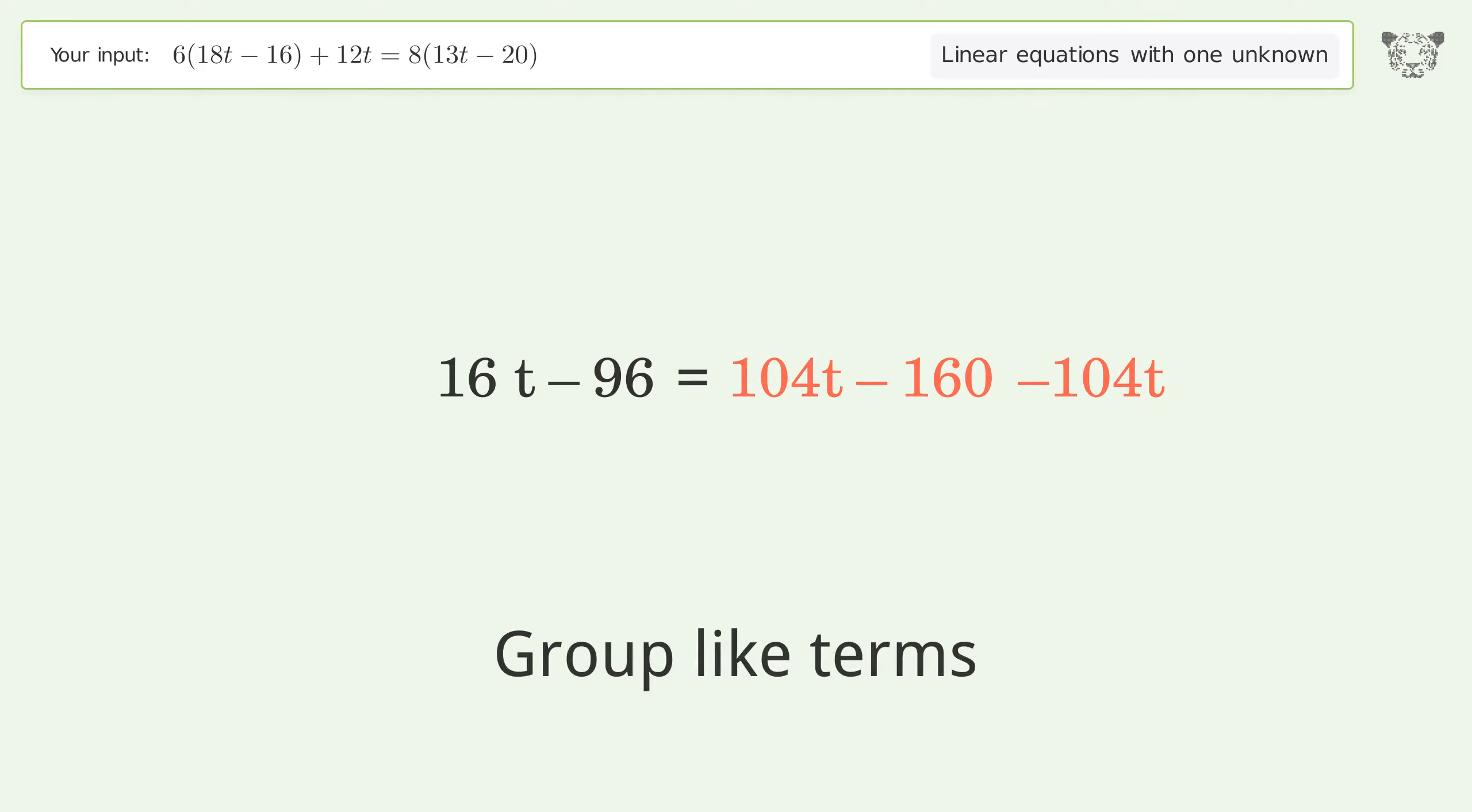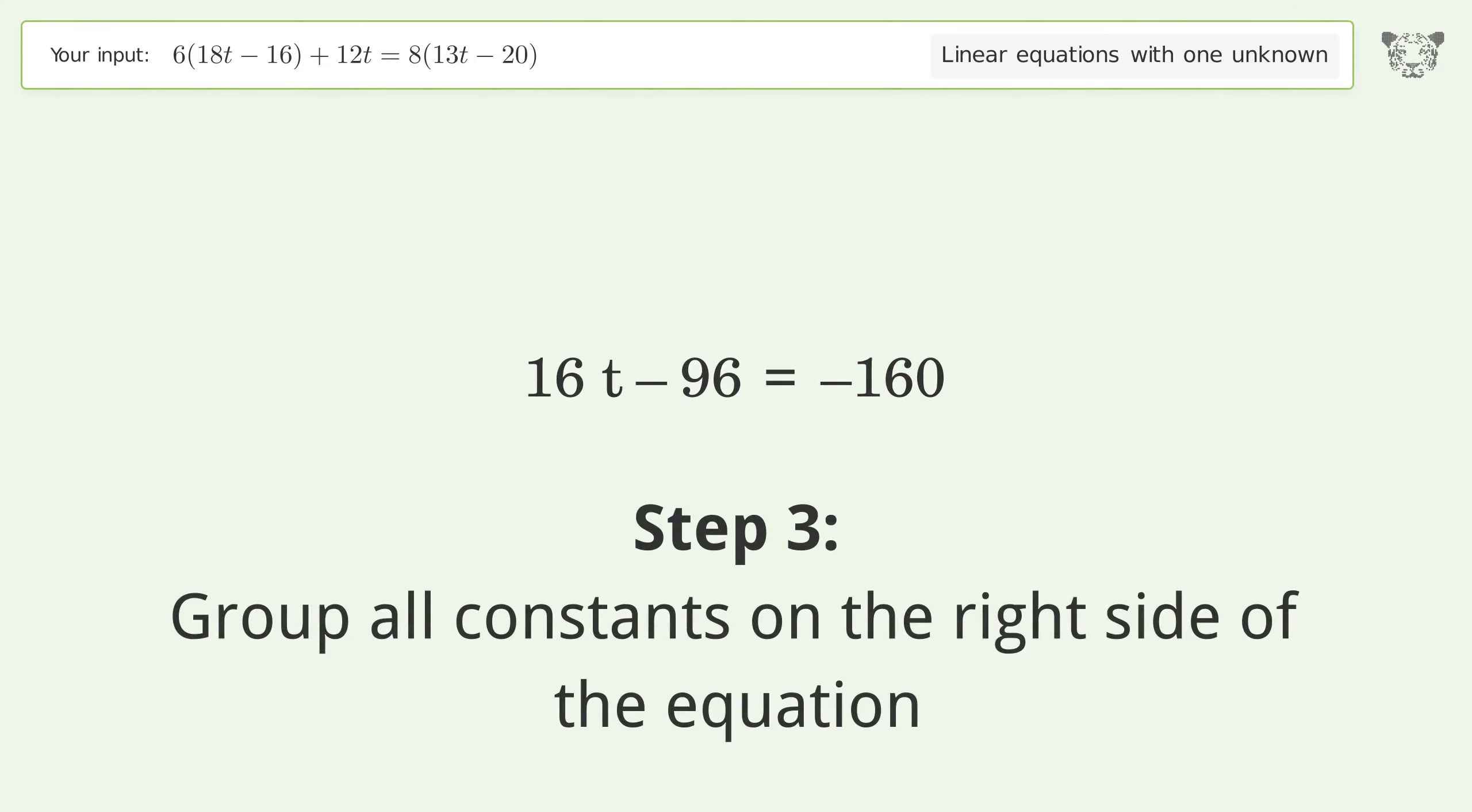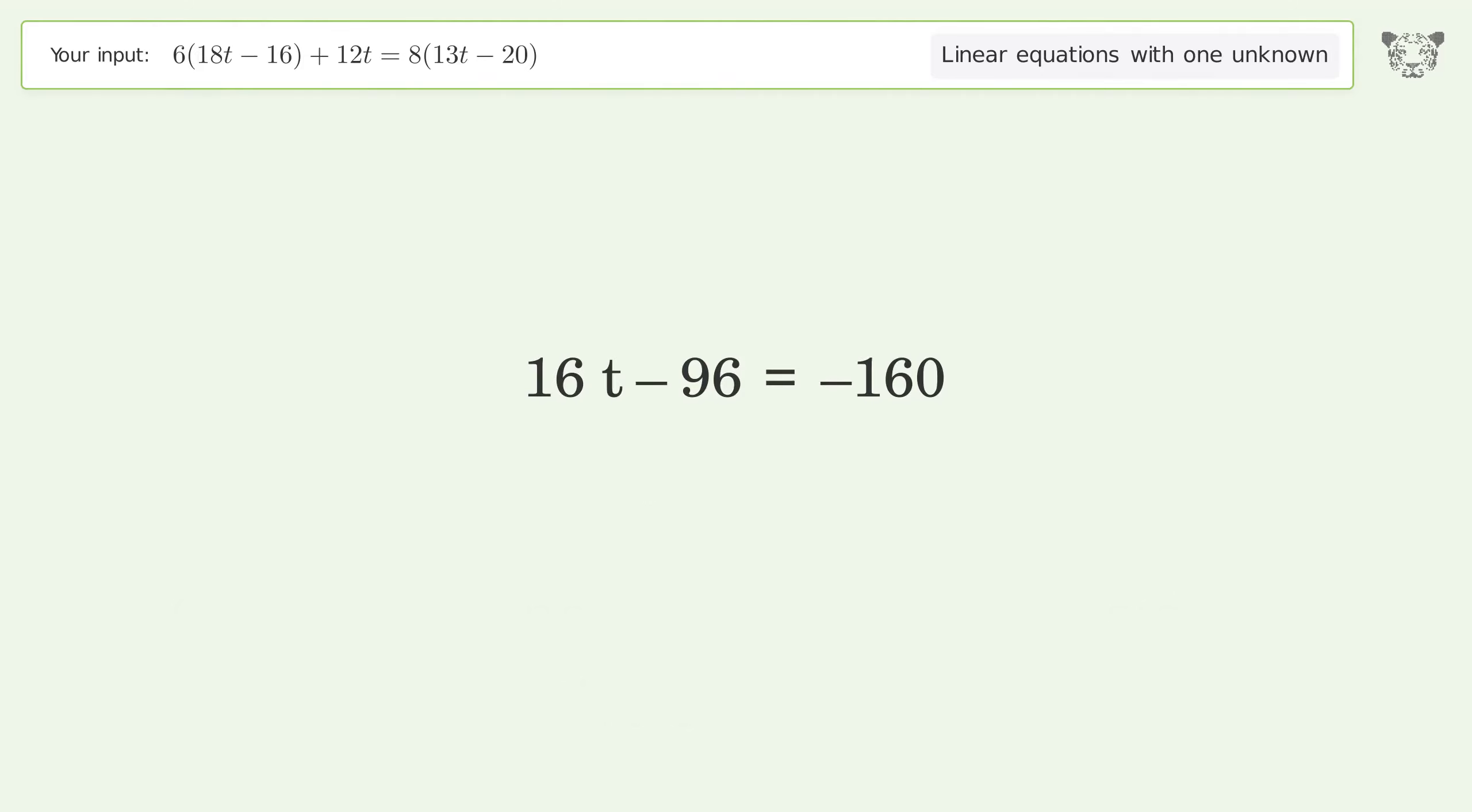Group like terms. Simplify the arithmetic. Group all constants on the right side of the equation. Add 96 to both sides. Simplify the arithmetic.